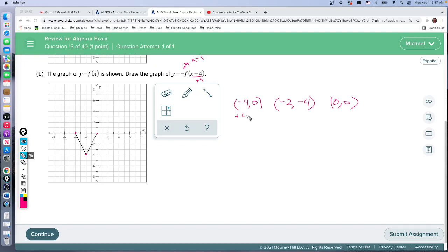This becomes zero, zero. This becomes positive two, negative four. And this one becomes four, zero.